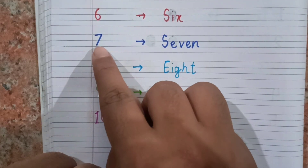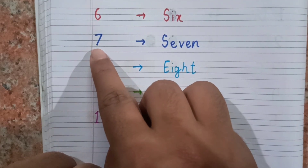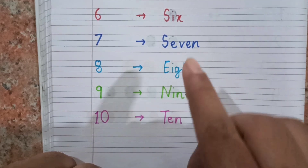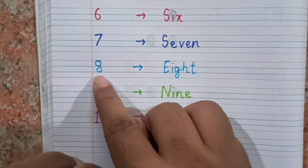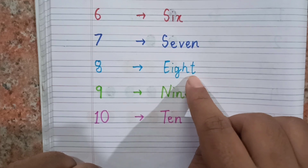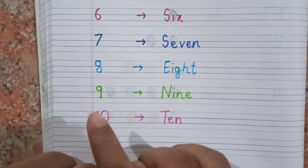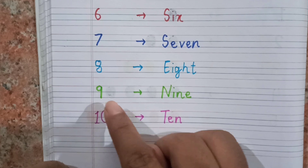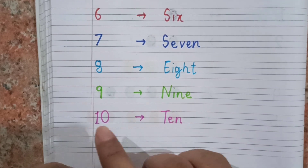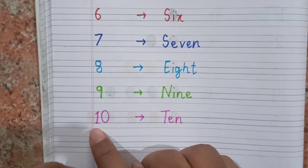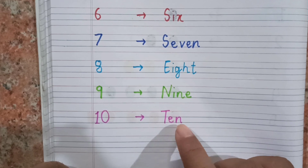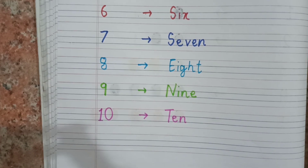After six, the next number is seven, and the spelling of seven is S E V E N. Seven. After seven, the next number is eight, and the spelling of eight is E I G H T. Eight. After eight, the next number is nine, and the spelling of nine is N I N E. Nine. After nine, the next number is ten — one zero, ten — and the spelling of ten is T E N. Ten.